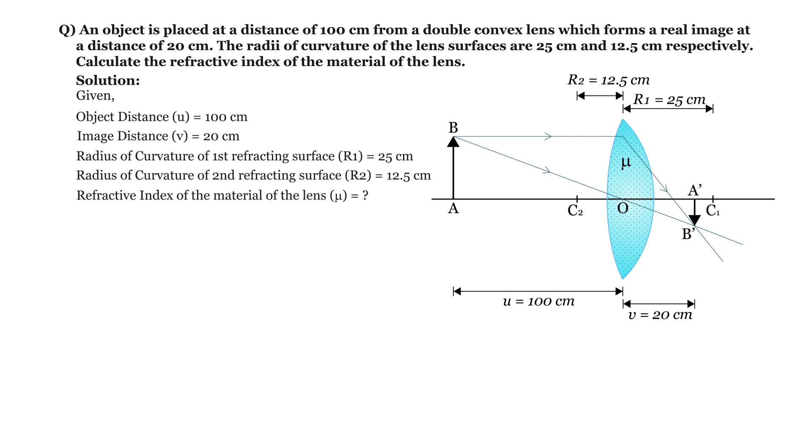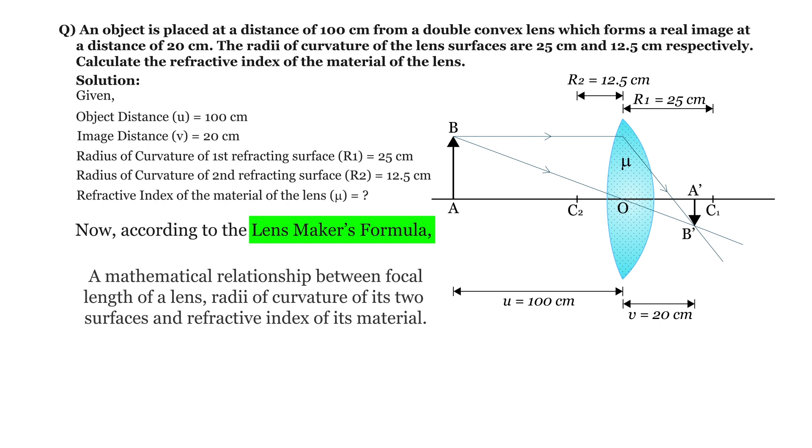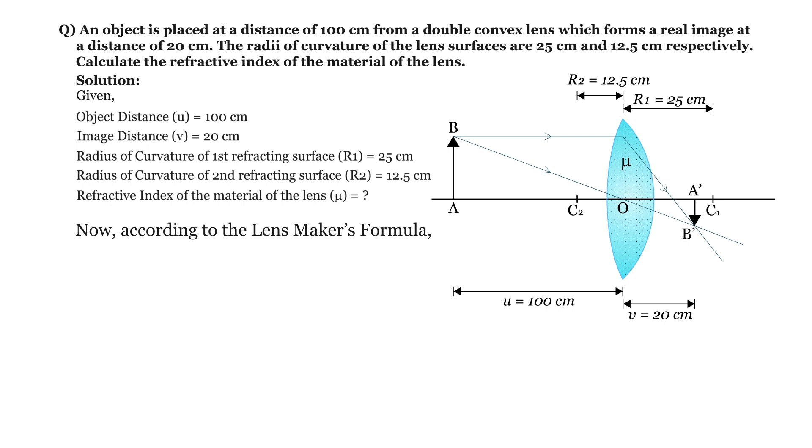Here, mu represents the refractive index of the material of the lens. Obviously, we'll use the lens maker formula. It is a mathematical relationship between focal length of a lens, radii of curvature of its two surfaces, and refractive index of its material. Mathematically, it can be written as 1 by f equals mu minus 1 times 1 by R1 plus 1 by R2.